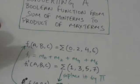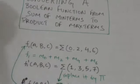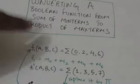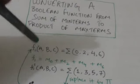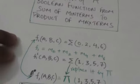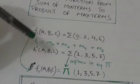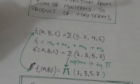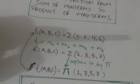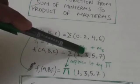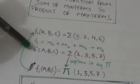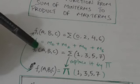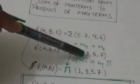The complement of f1 would be the sum of those minterms which are not present in the function f1. So it would be the sum of the minterms whose subscripts are 1, 3, 5, and 7. Now, to transform f1 into the form of product of maxterms, first replace the sigma symbol by the pi symbol, then write the subscript numbers present in the complement of f1 — that is 1, 3, 5, 7 — as they are.